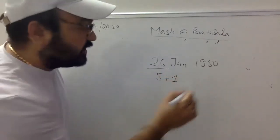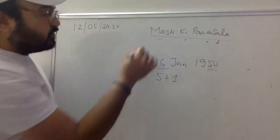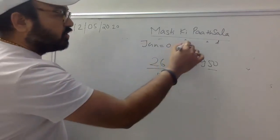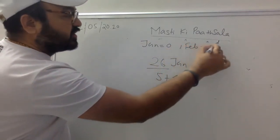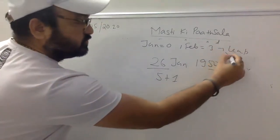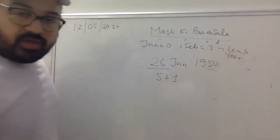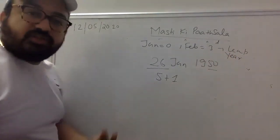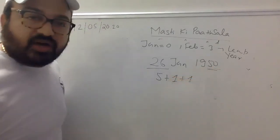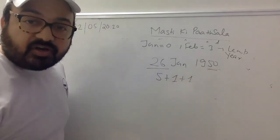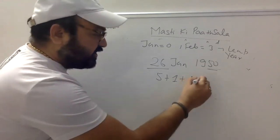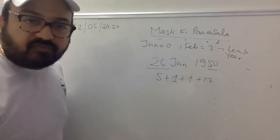अगर leap year होता, तो January का code 0 लेना और February का code बदलकर 3 लेना। Normal year में January 1. 50 को 7 से divide करो — remainder 1. Leap year: 50 को 4 से divide करो — quotient 12, यानी 48.